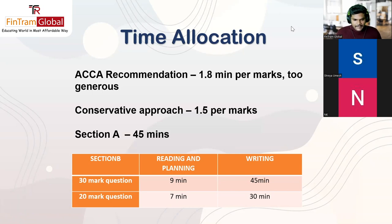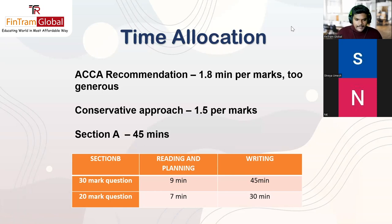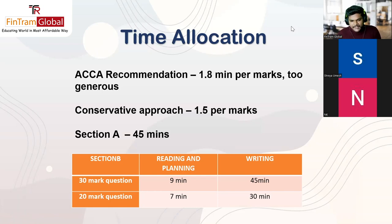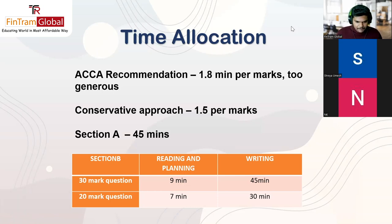The remaining 45 minutes should be allocated to writing your answer. Nine minutes is a generic timing — quick readers can take less time and allocate more to writing, which is fine. For the 20-mark questions, allocate seven minutes to reading and planning and 30 minutes to writing. That's the time allocation for Section A and Section B.